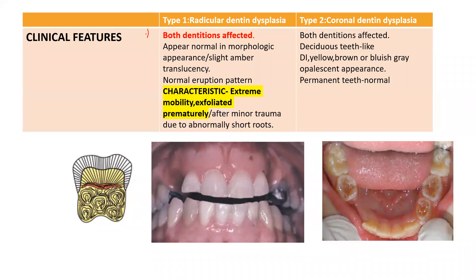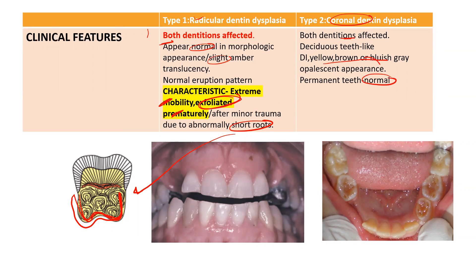Looking at clinical features: in radicular dentin dysplasia, both dentitions are affected. The teeth appear normal or slightly amber in translucency; however, they have extreme mobility and exfoliate prematurely after minor trauma due to abnormally short roots. In coronal dentin dysplasia, both dentitions are affected. The deciduous teeth, like in dentinogenesis imperfecta, appear yellow, brown, or bluish-gray, whereas the permanent teeth appear normal.